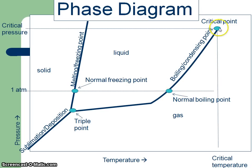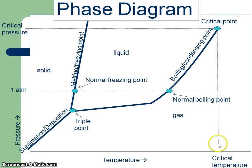This point up here is the critical point. It doesn't matter how much pressure I put on past this point — everything's gas. The molecules are too excited, too high a temperature. We call this the critical point. You need to be able to pull off the graph the critical temperature and the critical pressure. So this is a phase diagram — be able to read it and get off it what I ask you for.